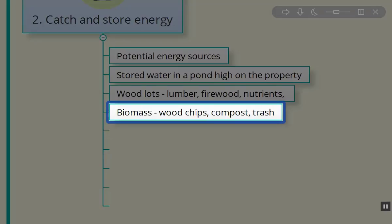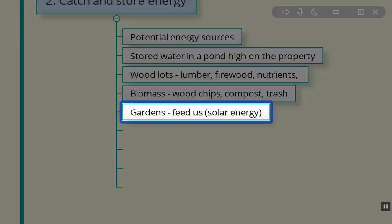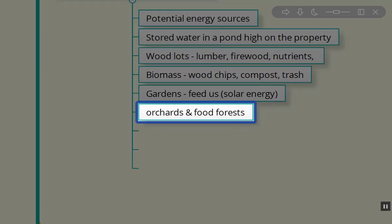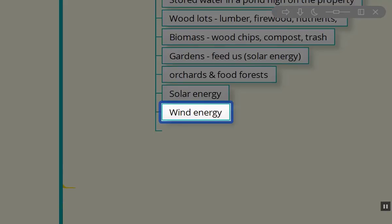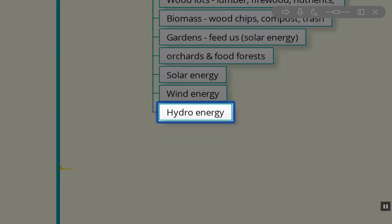Biomass, the woodchips, the compost, the trash, the cardboard, all energy sources. Gardens, they feed us. Solar energy, just like in the previous ones I mentioned. These are all energy resources we can use over and over again, and they're all the result of capturing solar and water energies. Our orchards, our food forests, the solar energy, the photovoltaic, the solar thermal, the solar hot water, wind energy, pumping water, electrical energy generated from wind, certainly geothermal in some locations.